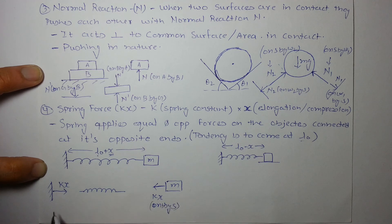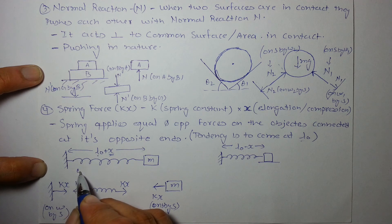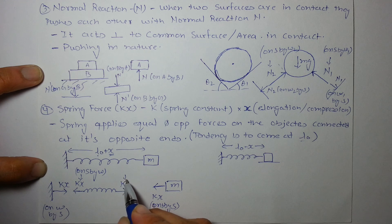And again, we can see these are the forces on block by spring. This is on wall by spring, and the equal and opposite forces will be applied by these two objects. This is Newton's third law, we will study it in detail. KX and KX, but this force is on spring by wall and this force is on spring by block.